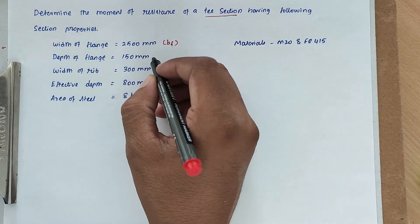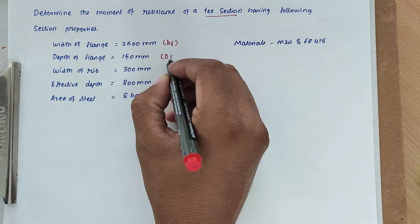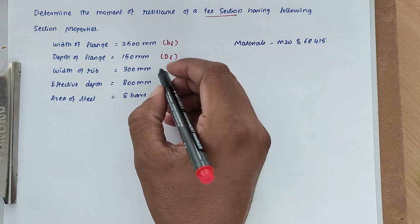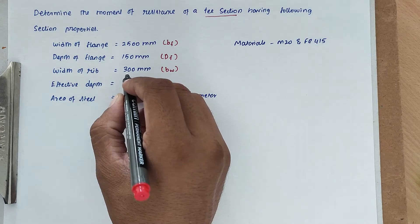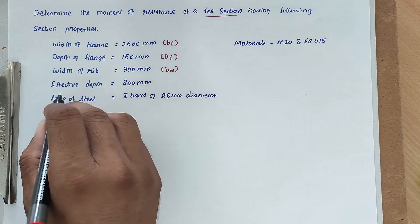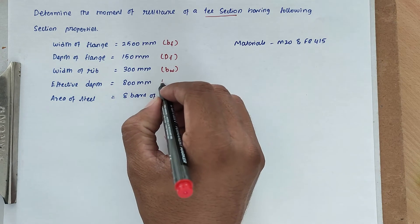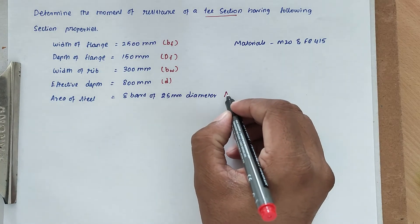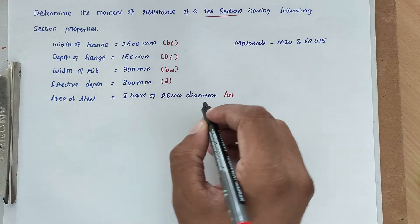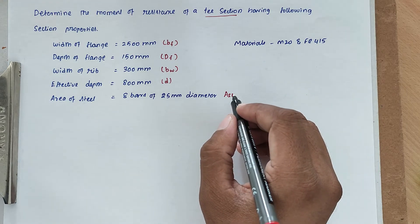Then depth of flange is 150 mm. Width of rib BW equal to 300 mm. Effective depth D equal to 800 mm. Area of steel AST equal to 8 bars of 25 mm diameter bars.